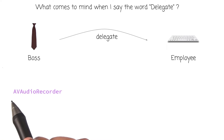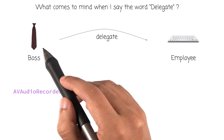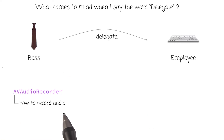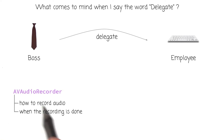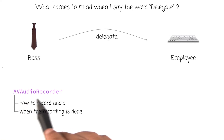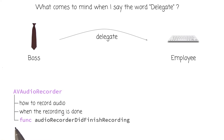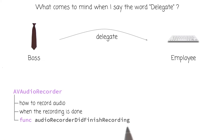Here, you can think of AVAudioRecorder like a boss. It knows how to record audio. It also knows when the recording is done and is ready for playback. In fact, if you look deep enough in the code for AVAudioRecorder, you'll find a function called audioRecorderDidFinishRecording. This is the function that gets called when the recording has finished.